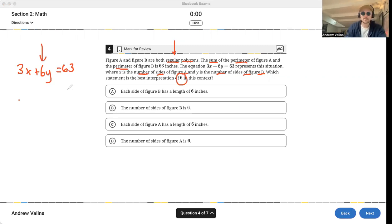Well, if we're talking about perimeter and it tells us that x has to do with figure A and the y has to do with figure B, and the 63 is the total inches, it must mean that if x is the number of sides of figure A, there's 3 inches per side plus 6 inches per side. So the 6 is the length of each side on figure B. Each side of figure B has a length of 6 inches. That's the answer there.